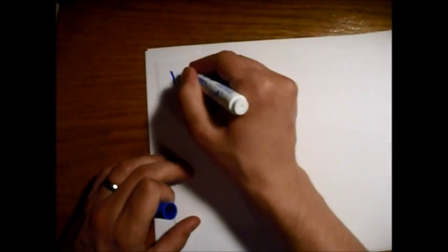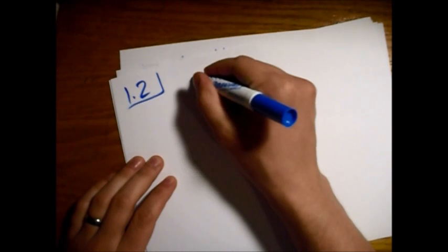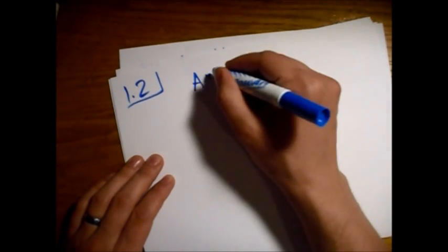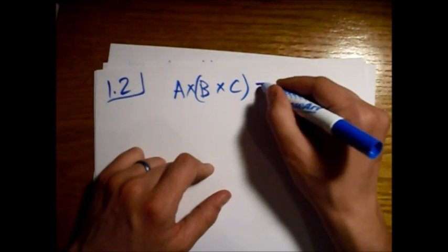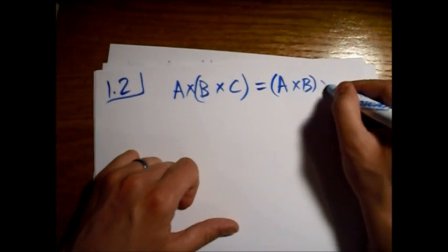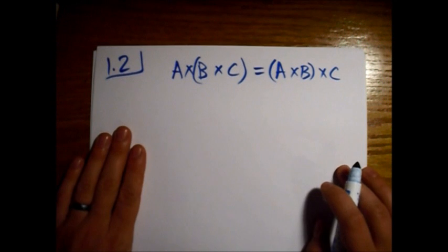So this is Griffith's E&M problem 1.2: Is the cross product associative? Does A cross B cross C, with the parentheses here, so doing this cross product first, equal A cross B, so doing this one first, then cross C. Like that. Is this statement true?